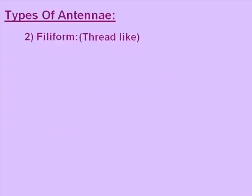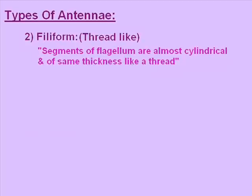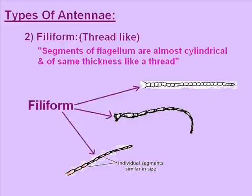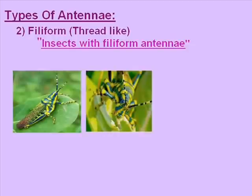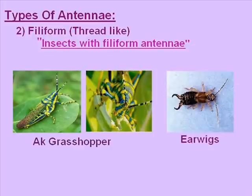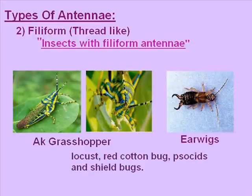The second type of antenna is filiform. Filiform means thread-like — segments of the flagellum are almost cylindrical and of the same thickness, like a thread. The pictures are showing the filiform antenna and the arrow is pointing towards them. Insects with filiform antennae are grasshopper, earwigs, locusts, red cotton bugs, stink bugs, and shield bugs.